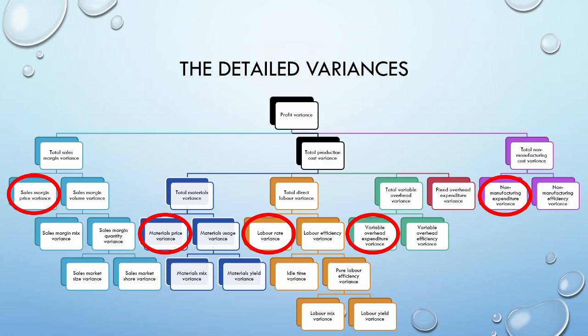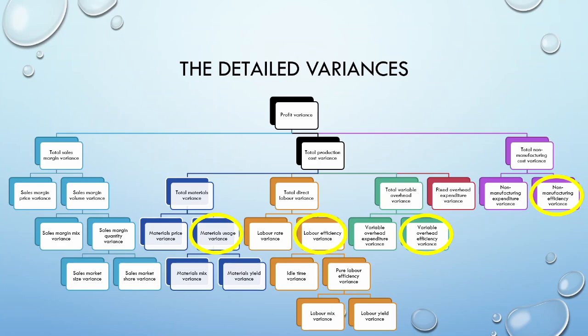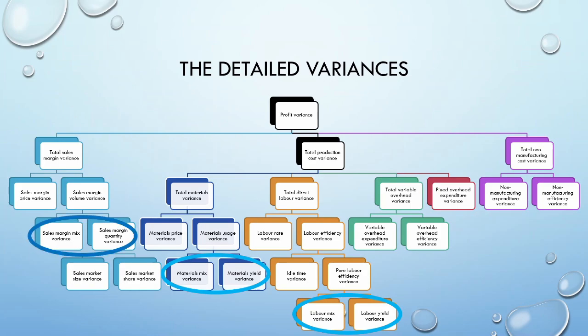Our usage variances are also all similar. These include our materials usage, labor efficiency, variable overhead efficiency, and non-manufacturing efficiency. We can then see that our materials mix and yield variances are similar to our labor mix and yield variances. These variances are also related to, but slightly different from, the sales margin mix and quantity. So there are a lot of similarities. If we can understand what we are doing, we will save time trying to memorize, and we will also have a better understanding of what could cause the variances in the first place.